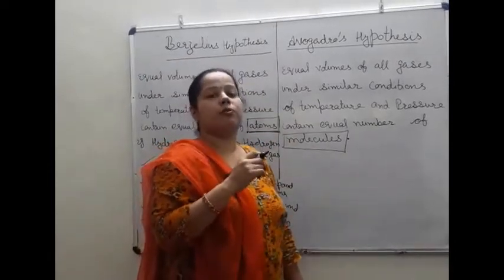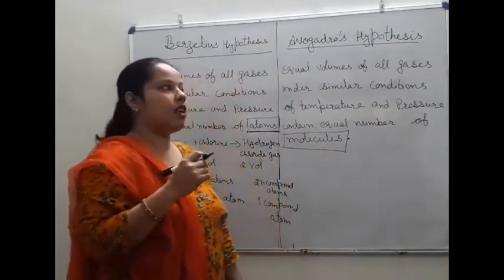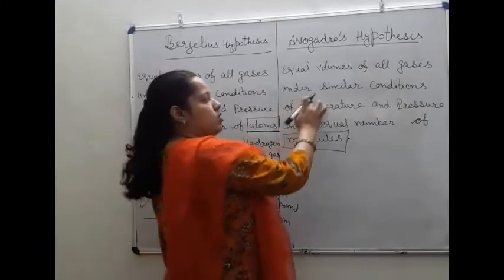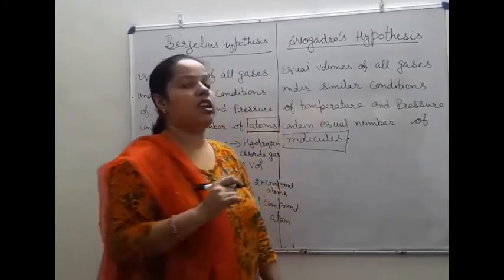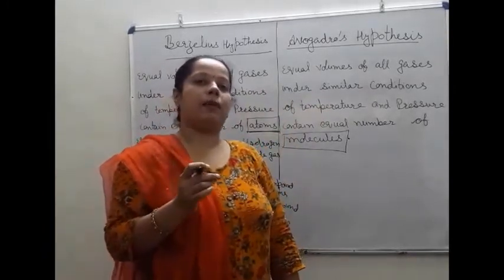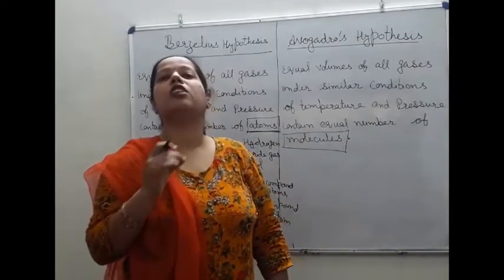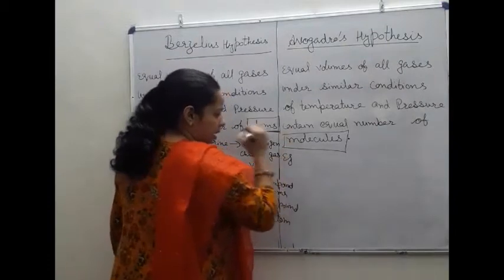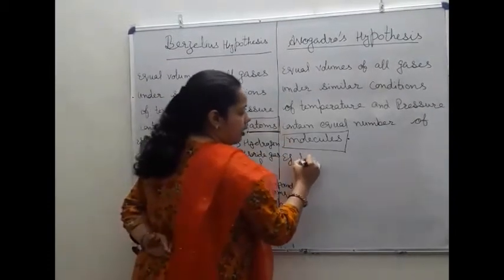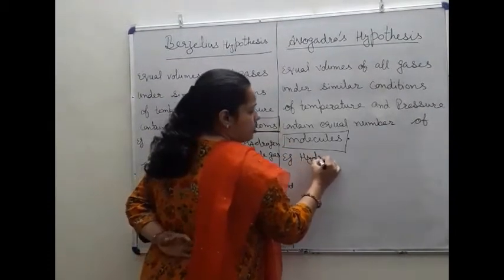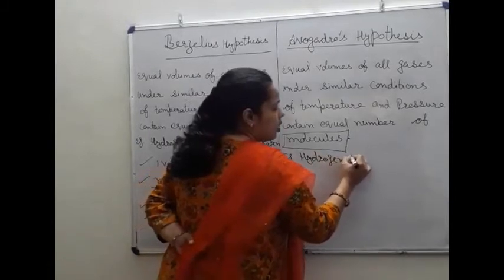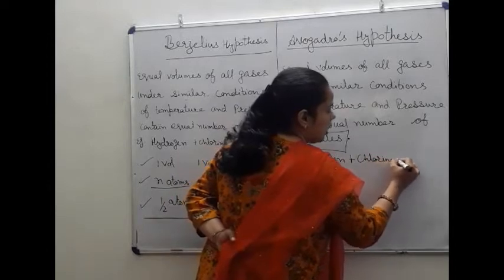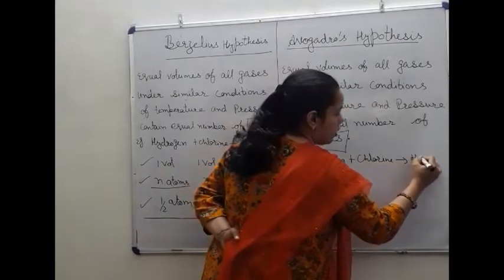Now, if we say that the same number of molecules are present in the same volume at the same conditions of temperature and pressure, then the same amount of molecules are present in equal volumes of gases. For example, hydrogen gas combined with chlorine gas will form hydrogen chloride.